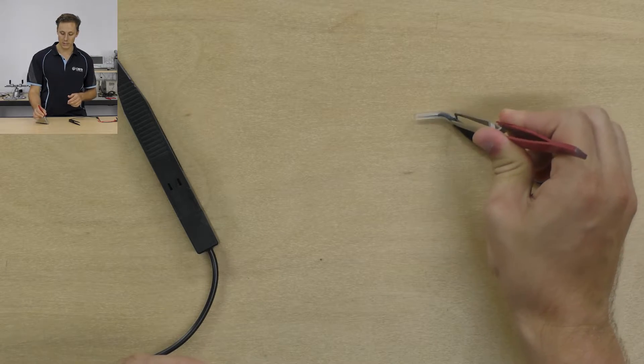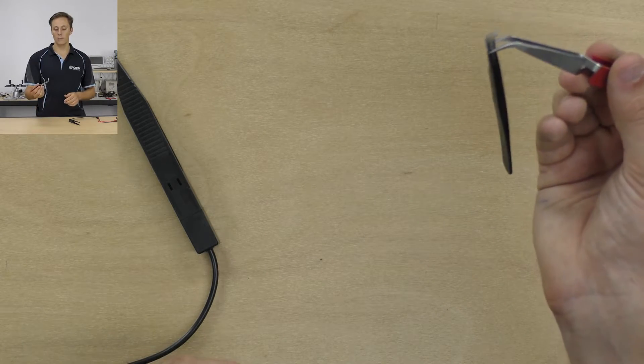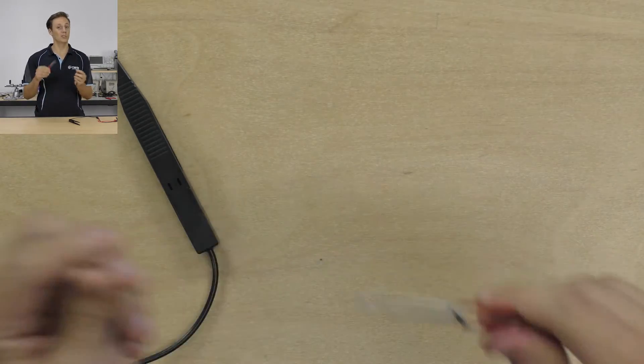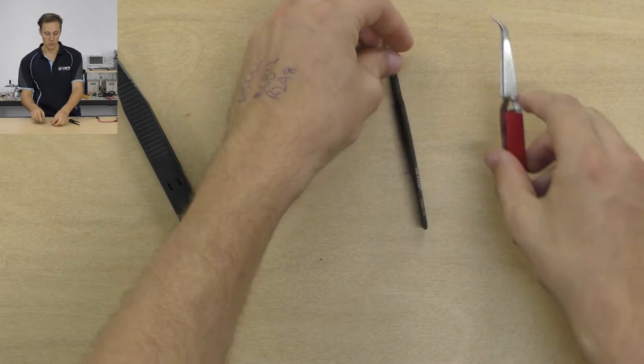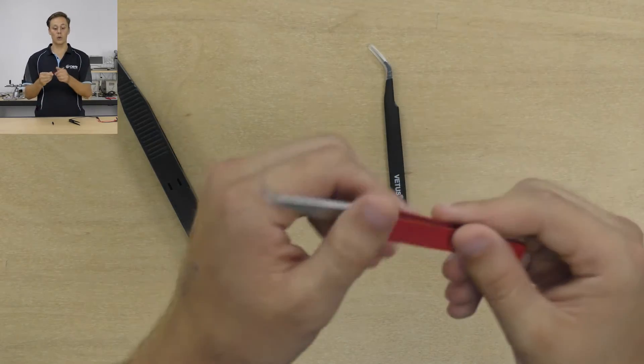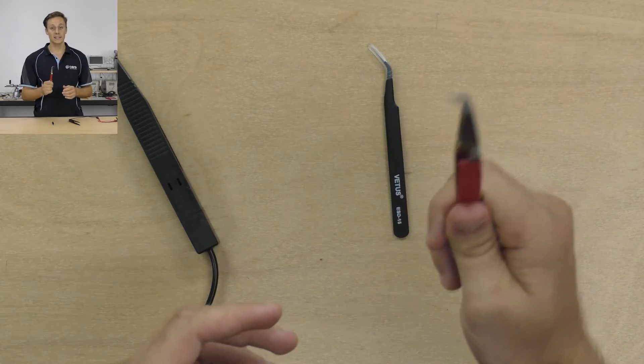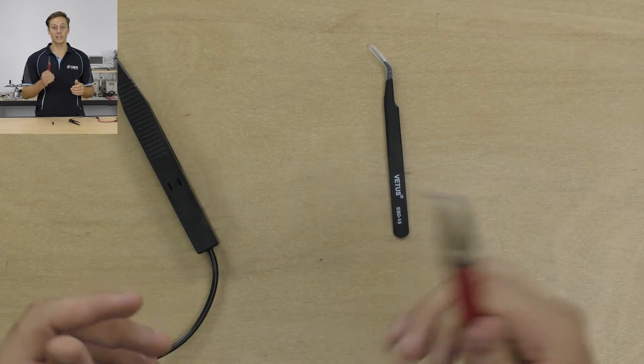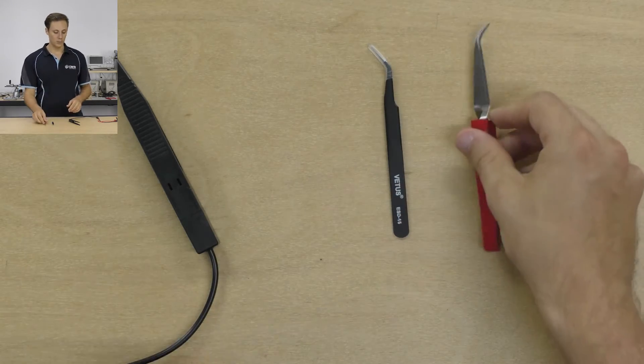So say you want to pick up these tweezers, simply grab a hold, open them up, and then let go, and they'll give you a really, really secure grip, which is awesome. And again, you can get these in the curved variety, or the straight variety. They're ESD, electrostatic discharge, safe. They have a nice coating on them, which prevents that.